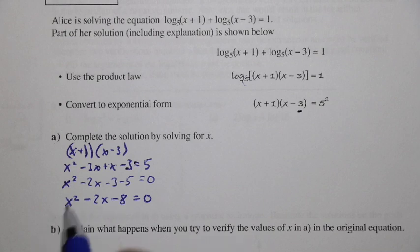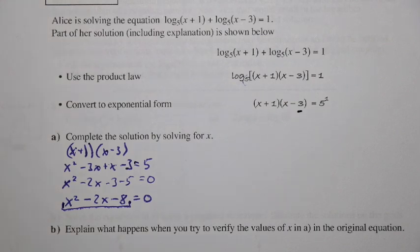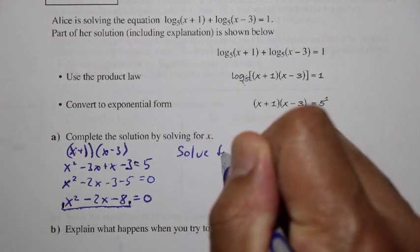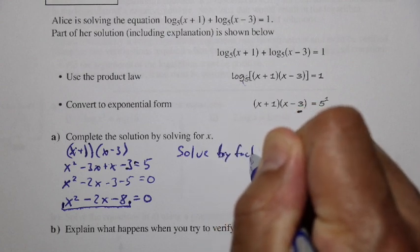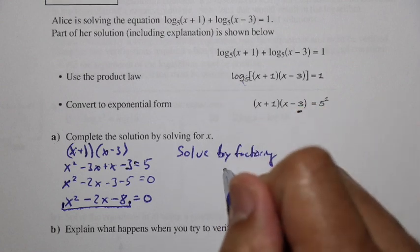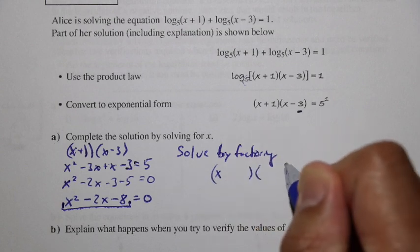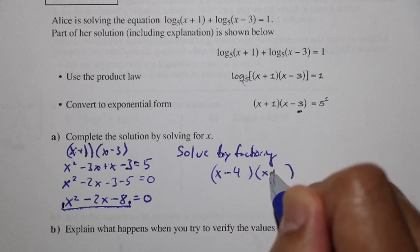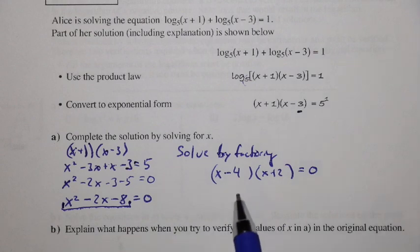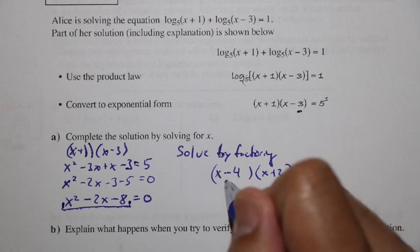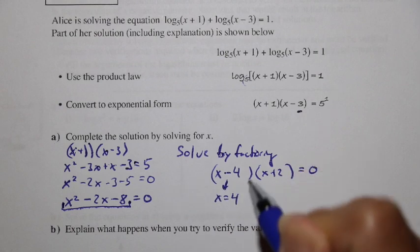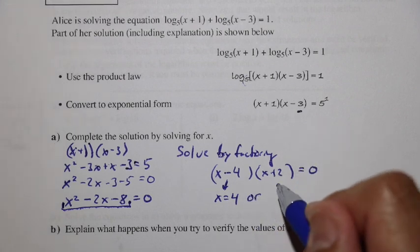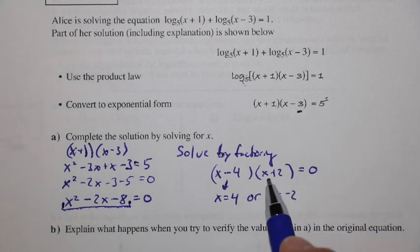We have a quadratic equation equal to 0, and we can solve by factoring. This factors as (x minus 4)(x plus 2) equals 0. When two expressions multiply to equal 0, we solve each factor: x minus 4 equals 0 gives x equals 4, or x plus 2 equals 0 gives x equals negative 2.